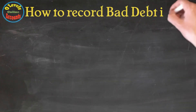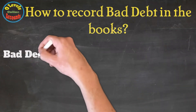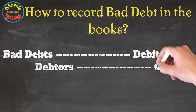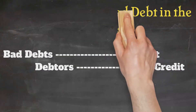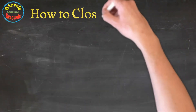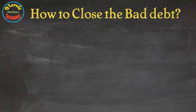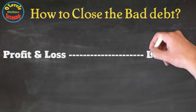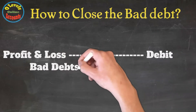The recording entry for bad debt is: debit Bad Debts and credit Debtors. Since it is an expense, it has to be closed in the profit and loss account. The closing entry is: debit Profit and Loss Account and credit Bad Debts.